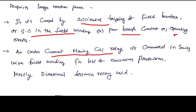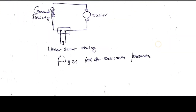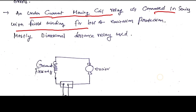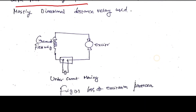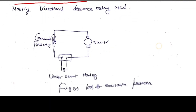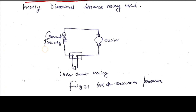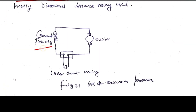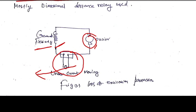An undercurrent moving coil relay is connected in series with the field winding for loss of excitation protection. You can see in this diagram the protection against loss of excitation. Mostly, a directional distance relay is used for field winding protection. In case of alternator failure of excitation between the exciter and field winding, we provide an undercurrent moving coil relay. Whenever the exciter fails, the relay gives a signal to the operator that loss of excitation is happening.